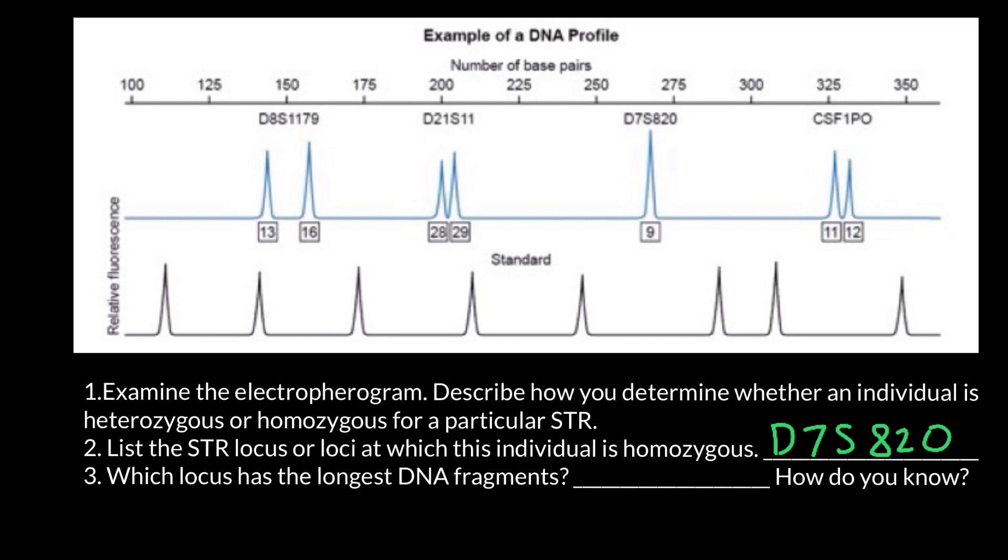This allele and this one may differ not just by the number of repeats of the core sequence, but also by the sequence of the flanking regions. This molecule has fewer number of repeats but may have, for example, a greater flanking region.